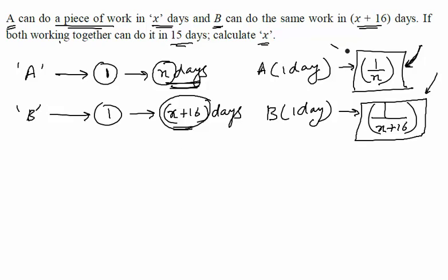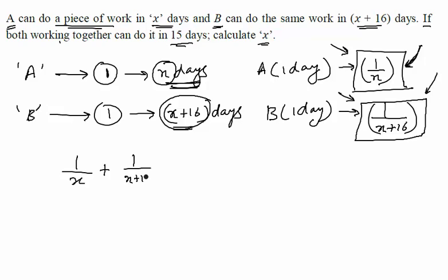These two quantities are very important — the amount of work done in one single day. Now going back to the question: if both A and B are working together in one day, how much portion of the work will they be able to complete? A can complete 1/x portion of the work, and B can complete 1/(x+16) portion of the work, so together they complete this combined amount in a day.